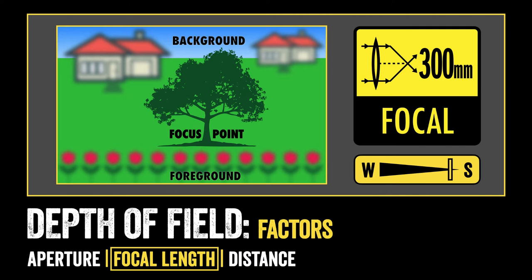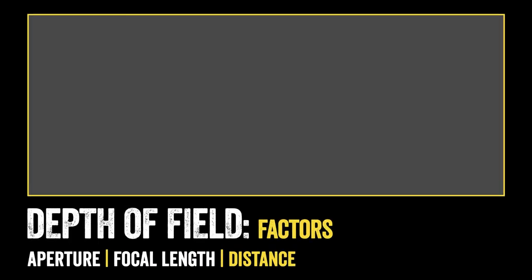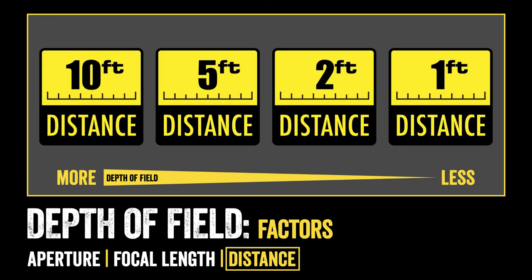Now that we've visualized how focal length impacts our depth of field, let's look at our final factor, which is distance. That distance refers to the distance from the camera lens to the subject we're focusing on. The more distance I have between my camera lens and the subject I'm focusing on, the more depth of field I have. Now as I get closer to a subject — move physically closer, not just zoom with a lens — I decrease the depth of field in my image.